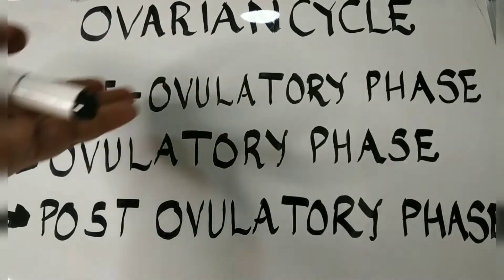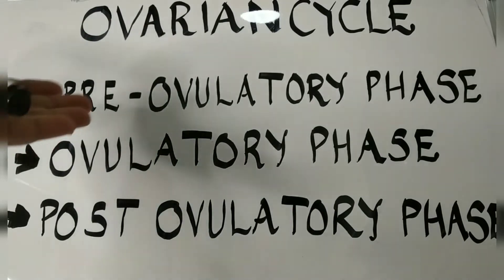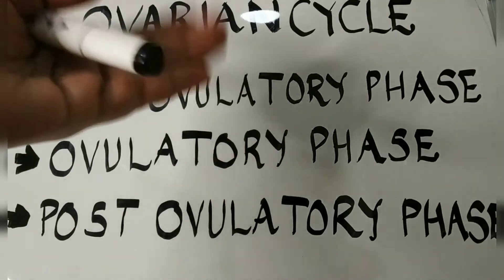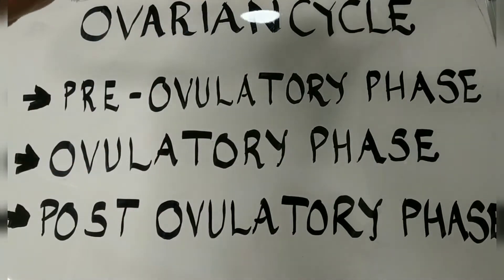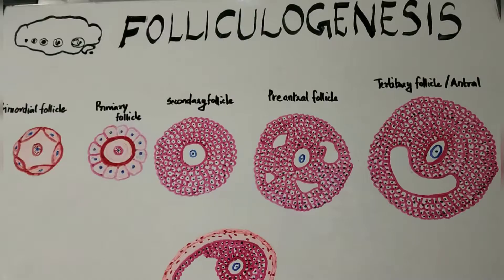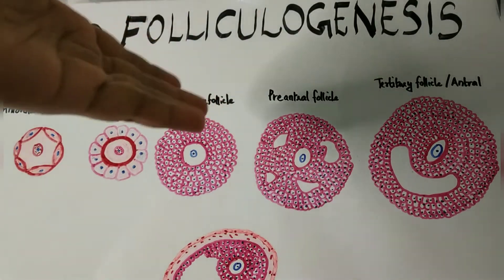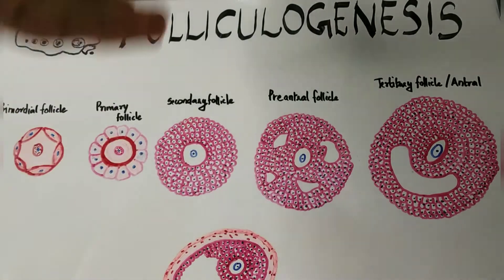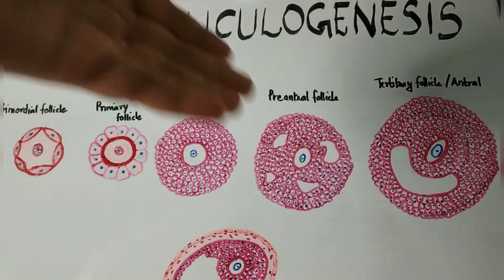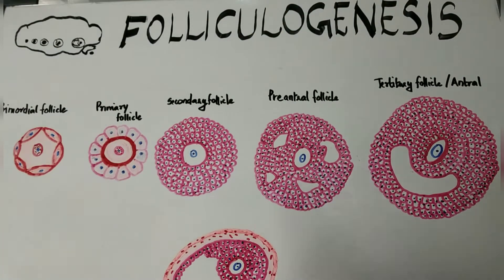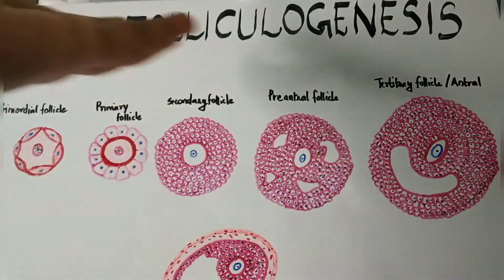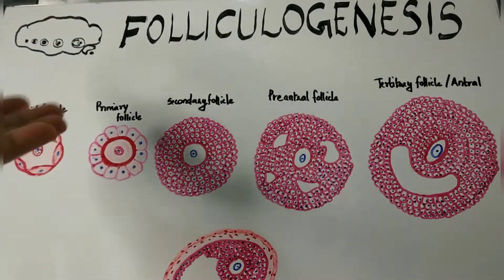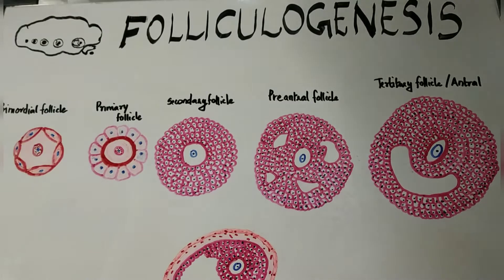First we will discuss the pre-ovulatory phase, the phase before ovulation takes place, during which the ovarian follicles mature. Folliculogenesis is the maturation of the ovarian follicles — the primordial follicles mature into primary, secondary, preantral, tertiary, and ultimately the Graafian follicle. This process of maturation is called folliculogenesis and it occurs during the first stage of the ovarian cycle, the pre-ovulatory phase.